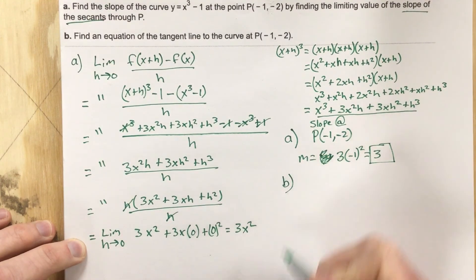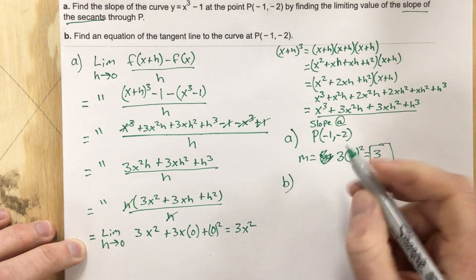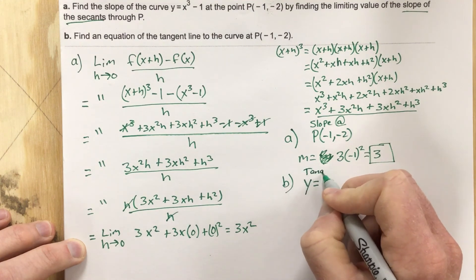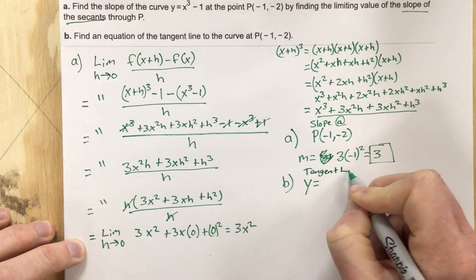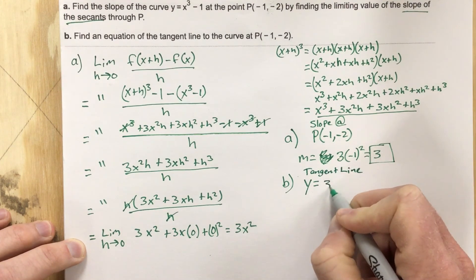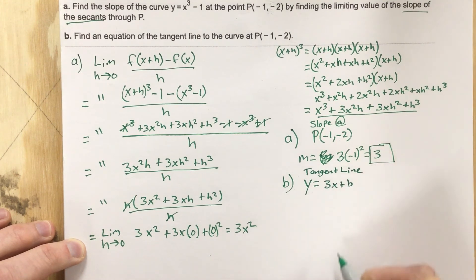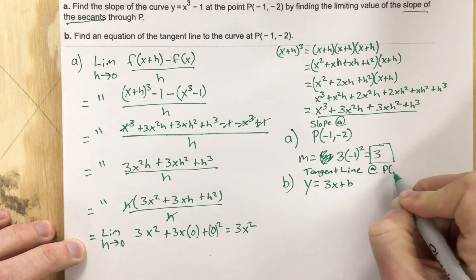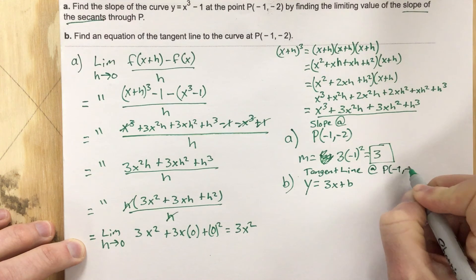Part B, then, we want to find the tangent line. So we take the slope, put it into y equals, if we're finding the tangent line, I'm going to write that, y equals 3x plus b. And we'll say at point negative 1, negative 2.